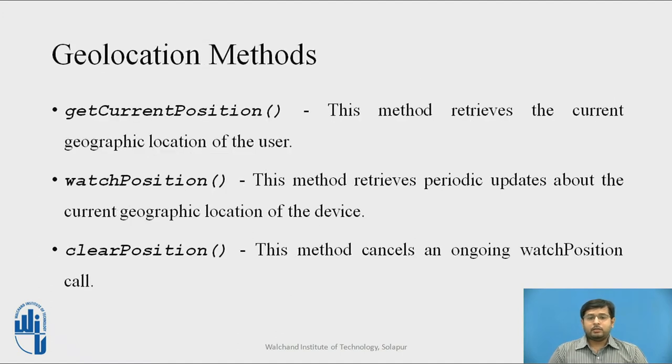There are three basic methods used to get the position or location of the user. First is GetCurrentPosition, which retrieves the current geographic location of the user. WatchPosition method retrieves periodic updates about the current geographic location of the device. This is usually used in maps type API or web pages. ClearPosition cancels the ongoing watchPosition call so that when it is not required, it clears the data retrieved from watchPosition or stops the watchPosition method.